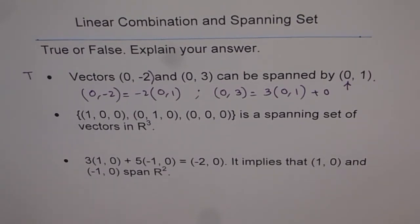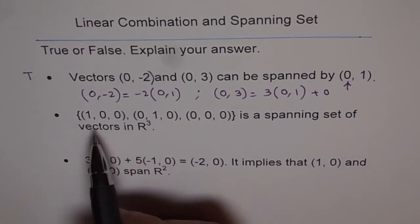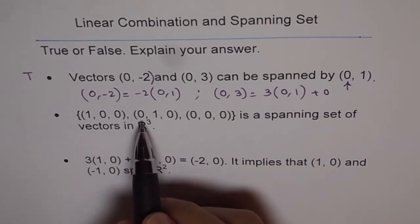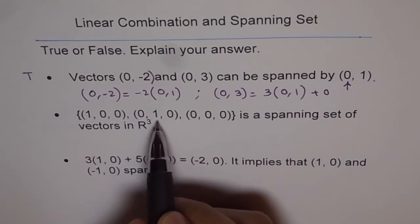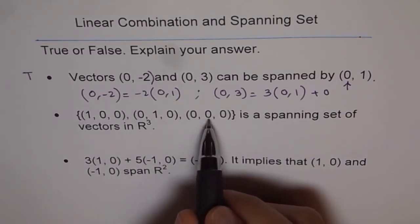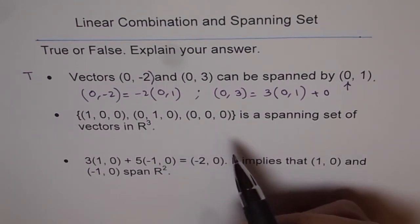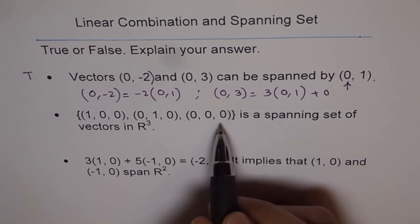Now question part 2 of this true or false is we are given a spanning set. Now in this set you will notice one is (1,0,0). It really means a unit vector along x-axis. It is your i. Now this one is (0,1,0). So that is a unit vector along y-axis. This is same as j. And then we have (0,0,0). (0,0,0) is a zero vector. Now for spanning you cannot have a zero vector.